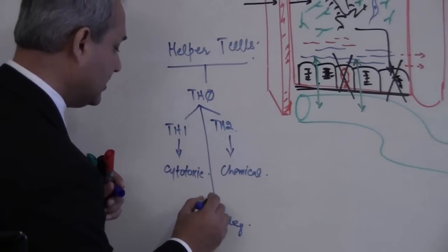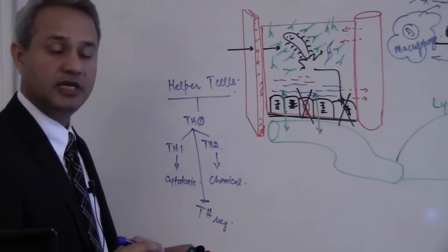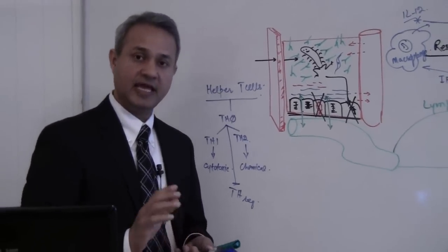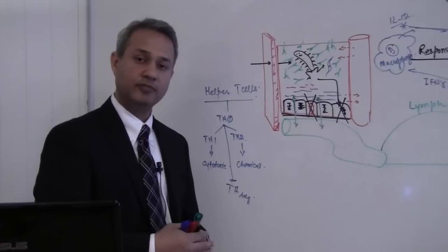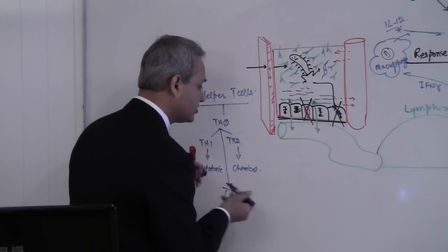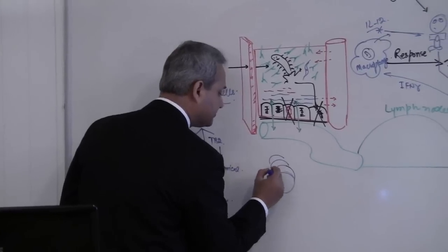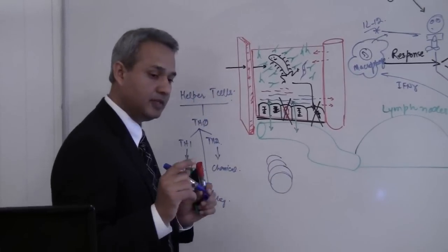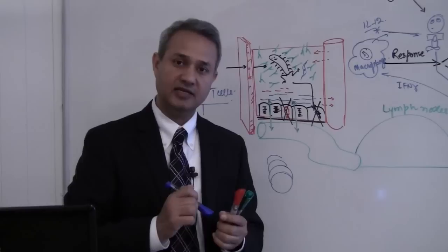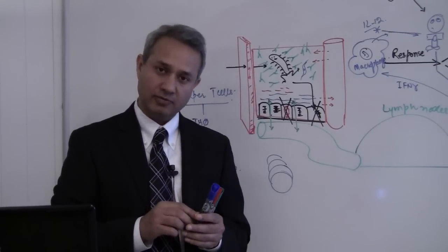Treg cells' function is to actually dampen the immune response. They normally come near the end of the immune response where a lot of T cells have been produced. Remember, as compared to B cells, T cells have a more difficult problem.